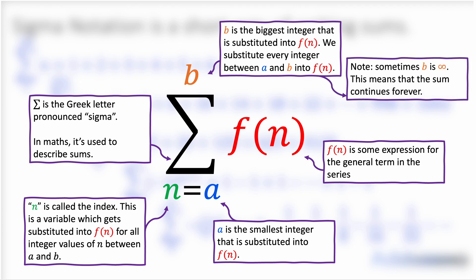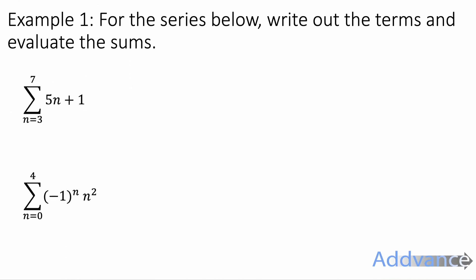Note that sometimes b is infinite and this means that the sum continues forever. So the top of the sigma has the infinite symbol. It means the sum continues for every integer after a.